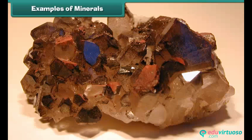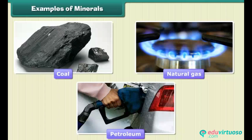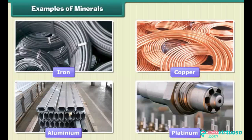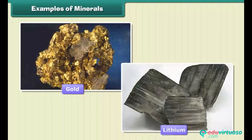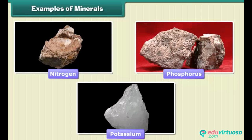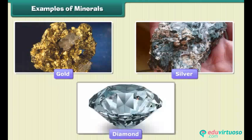Examples of minerals: Minerals are very important to humankind. Some minerals are used as fuels — for example, coal, natural gas, and petroleum. Some are used in industries, like iron, copper, aluminium, platinum, etc. Minerals like gold and lithium are used in medicines. Nitrogen, phosphorus, and potassium are used in fertilizers. Gold, silver, and diamond are used in jewelry.